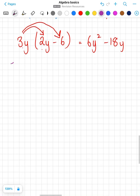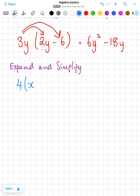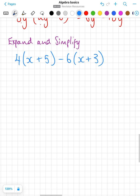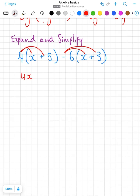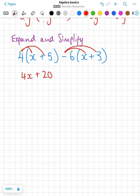We might be asked to expand and simplify. So let's take 4 times x plus 5 minus 6 times x plus 3. So the reason why it's expand and simplify is just that this is in 2 steps. We have to expand first, so 4 times x is 4x, 4 times 5 is 20. Minus 6 times x is minus 6x, minus 6 times positive 3 is minus 18.